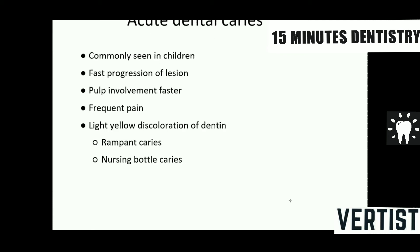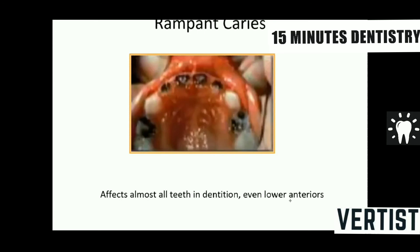Acute dental caries has fast progression, so pulp involvement is faster. The two main types are rampant caries and nursing bottle caries. Rampant caries affects almost all teeth in the dentition — even surfaces normally immune to caries, including the lower anteriors, are involved. It generally occurs in adolescents and young adults, possibly due to faulty eating or cleaning habits.